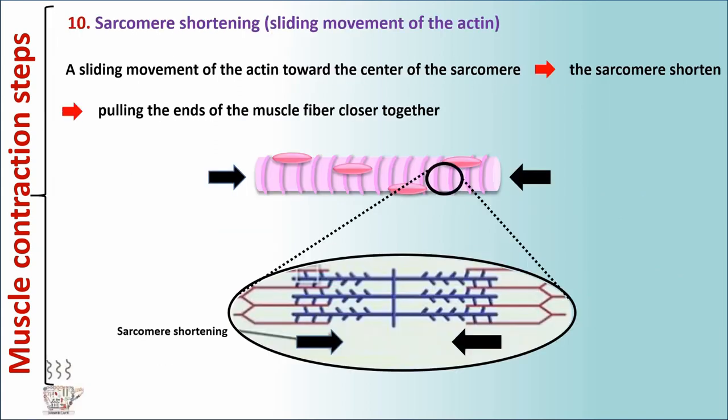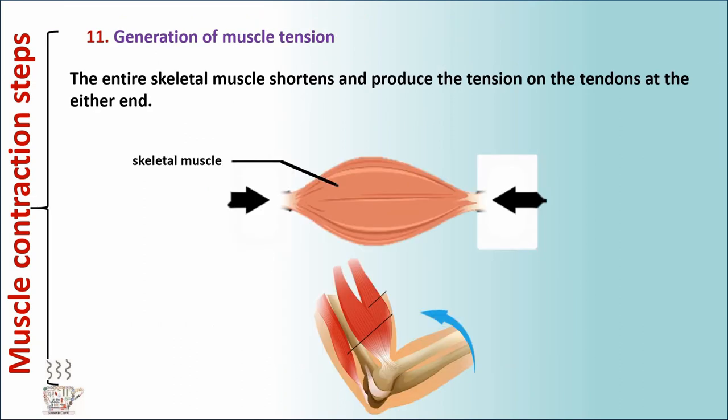Step 10: Sarcomere shortening. The sliding movement of the actin towards the center of the sarcomere causes the sarcomere to shorten, pulling the ends of the muscle fiber closer together. The last step: generation of muscle tension. The entire skeletal muscle shortens and produces tension on the tendons at either end.